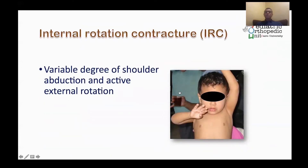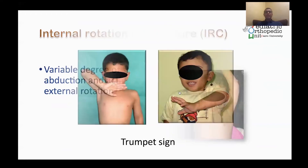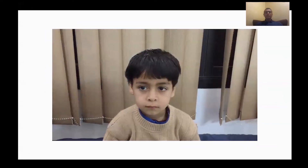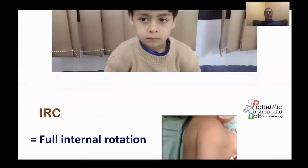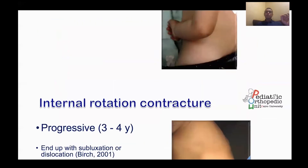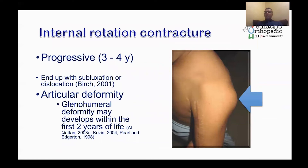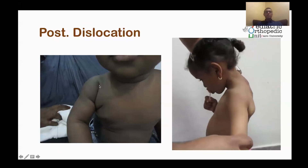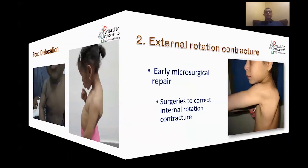With internal rotation contracture there is a variable degree of shoulder abduction — it may be very good or limited. Here almost full abduction range is present although there is passive limitation of external rotation. This patient with internal rotation contracture is able to do almost full abduction of the shoulder. To diagnose internal rotation contracture, there should be full internal rotation range but limited passive external rotation range, and this may progress to posterior shoulder dislocation.